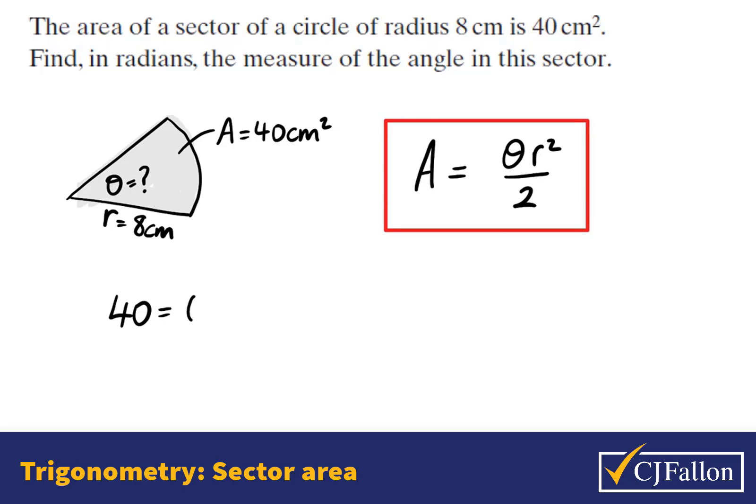We know everything in this formula except what theta is. Replacing A with 40 and the radius with 8, we see that 40 equals θ times 8 squared divided by 2, which is 32θ.